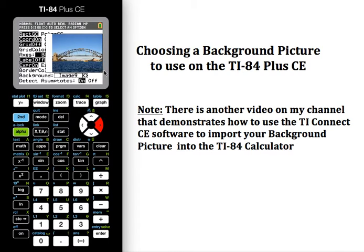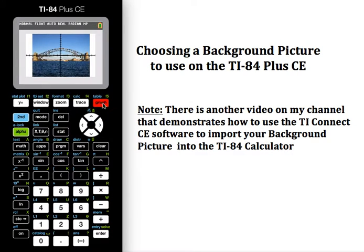Let's go to image 9 and use that, because that's a bridge that I've imported. Once you've selected the image you want, you're going to hit Enter just to be on the safe side. Now if I go and hit Graph, then the background picture is underneath the x and y axis.